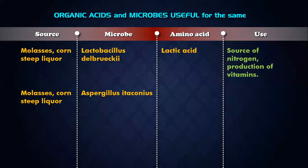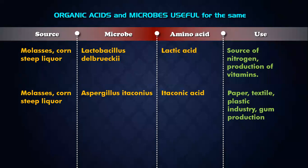Molasses and corn steep liquor with Aspergillus itaconicus gives us itaconic acid, which is used in paper, textile, plastic, and gum production. Sugar molasses are basically the fermented residue of sugarcane.